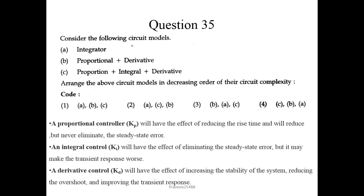Now question number 35. Consider the following circuit model: Integrator, proportional plus derivative, proportional plus integral plus derivative. Arrange the circuit models in decreasing order of their circuit complexity. This is again very simple question. So circuit complexity will be reduced as we remove the components. So it would be C B A. One note here also given. So the questions are from this. A proportional controller will have the effect of reducing the rise time and will reduce but never eliminate the steady state error. An integral control will have the effect of eliminating the steady state error, but it may make the transient response worse. A derivative control will have the effect of increasing the stability of a system, reduce the overshoot and improve the transient response.